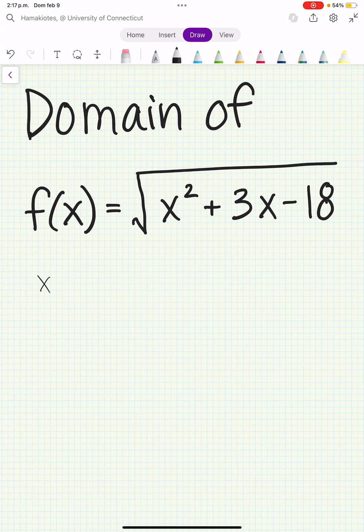We want to make sure that x squared plus 3x minus 18 is greater than or equal to 0. We can start by factoring the left-hand side, which factors as x plus 6 times x minus 3.